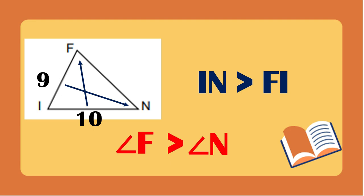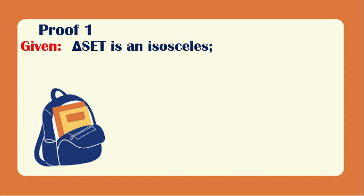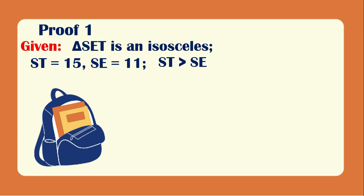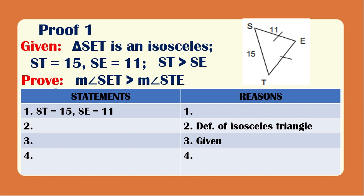Let us now have Proof 1. Given triangle SET is an isosceles triangle, ST equals 15, SE equals 11, and ST is greater than SE. Using this figure, we will prove that the measurement of angle SET is greater than the measurement of angle STE, using a two-column proof where we will provide the missing information needed.